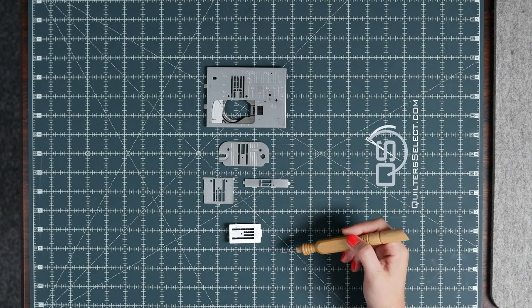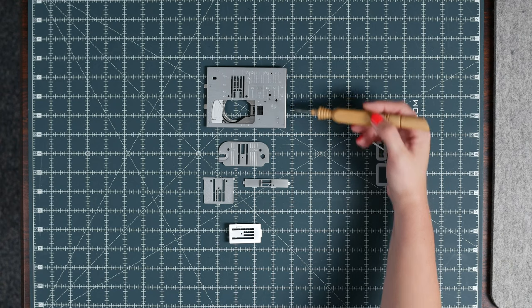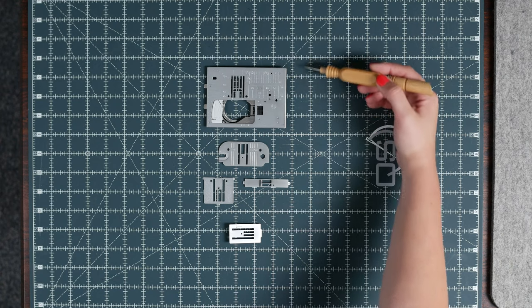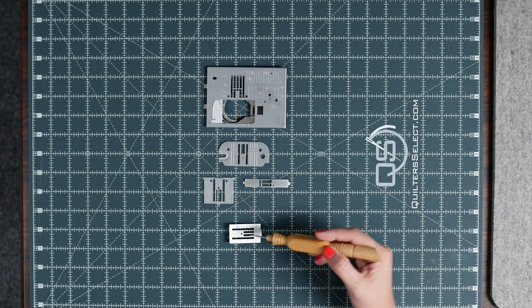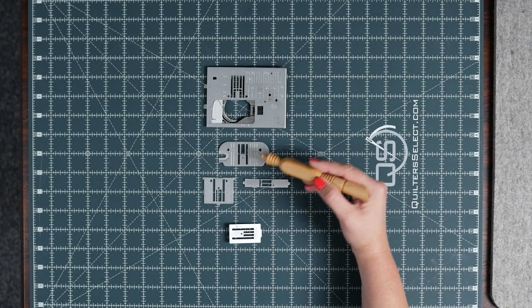I've gathered a variety of straight stitch plates so that you can see they come in different sizes and different shapes and have different markings on them. But do you see what's similar on every single one of these? You've got a very small opening where the needle goes into the plate.